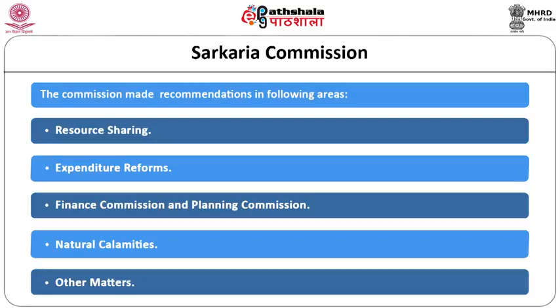On the Finance Commission and Planning Commission, since the Finance Commission has now attained its original position and the Planning Commission has been replaced by NITI Aayog, the Finance Commission devolves financial resources to states without competition. The 42 percent allocation from divisible taxes between the union and state governments is an example of this. Detailed historical recommendations by the Sarkaria Commission in this regard can be found in relevant texts.